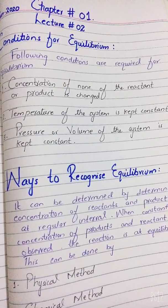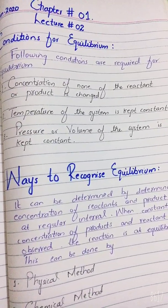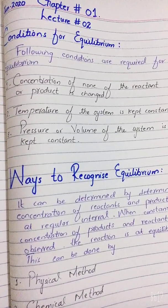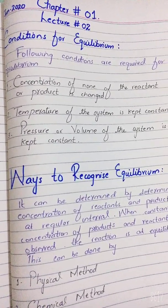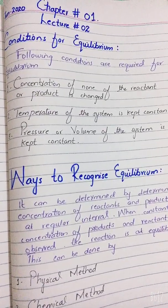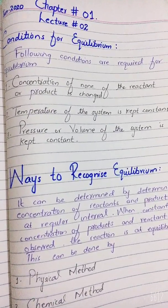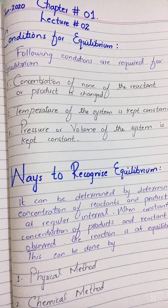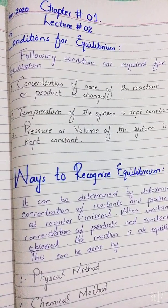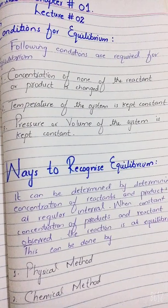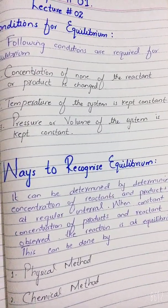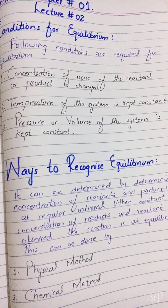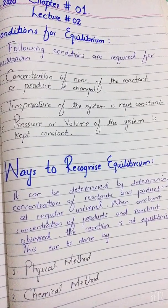Then we say that equilibrium has been achieved. But today we are going to discuss the certain conditions that are required for equilibrium. If we change these conditions, the equilibrium could not be established. The first condition, which is the most important for the establishment of equilibrium, is that the concentration of none of the reactants or products changes.